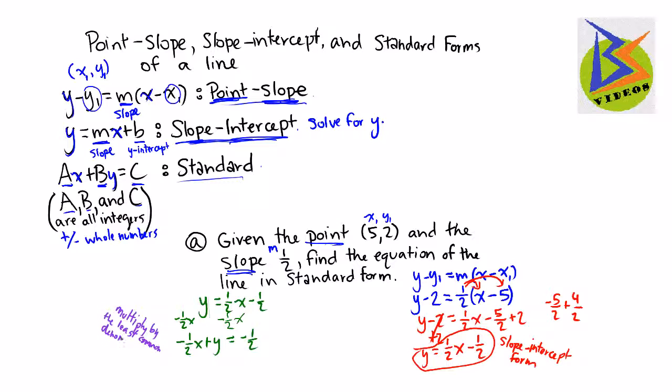And in this case it is 2. So I multiply everything here by 2. So we say 2 times negative 1/2 x is a negative 1x. 2 times y is just 2y. And 2 times negative 1/2 is negative 1. And so then we notice that we have, we could just simplify it and say negative x plus 2y equals negative 1. We now have it in standard form.